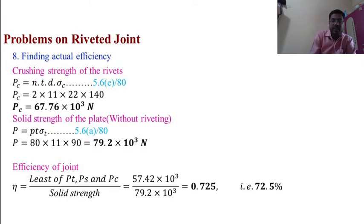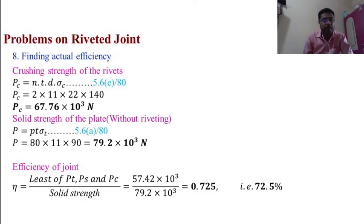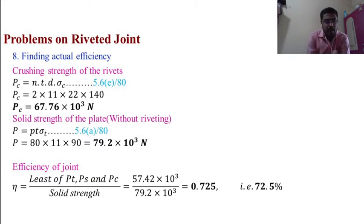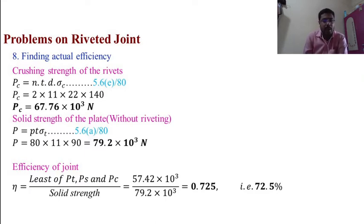Crushing strength: Pc = N × t × d × σc — equation 5.6E, page 80. N = 2, t = 11 mm, d = 22 mm, σc = 140 MPa. Pc = 2 × 11 × 22 × 140 = 67.76 × 10³ N.